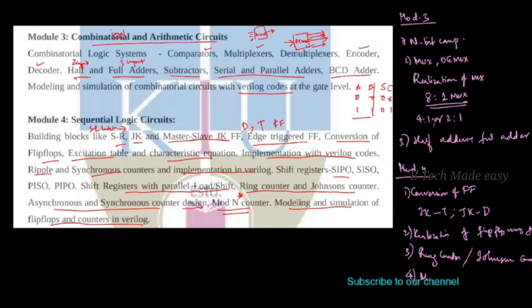We will look at mod-N counters, which generate many exam questions. A typical question is: design a divide-by-2N circuit using N number of flip-flops, draw the truth table, and write the D-form expressions. We will explain the overview and also cover Verilog modeling and simulation, which is the fourth module's final topic.